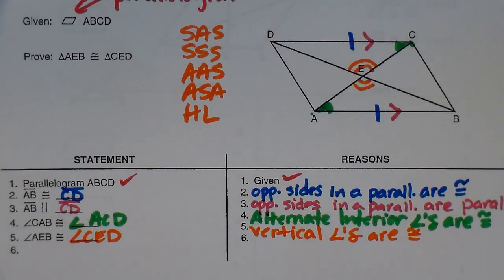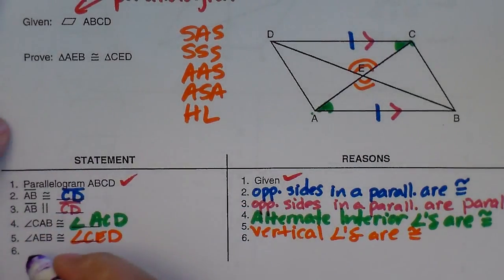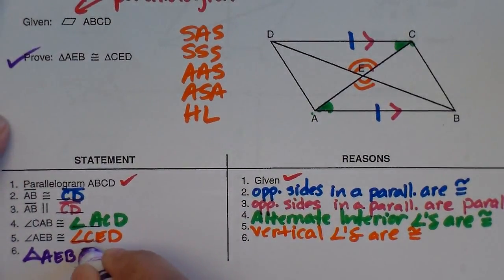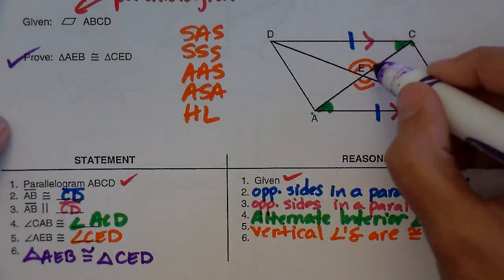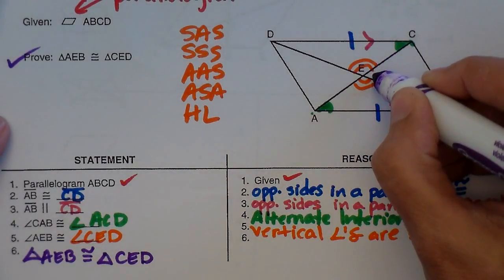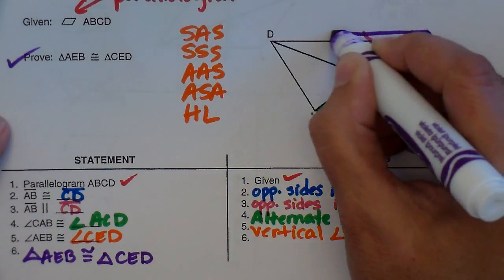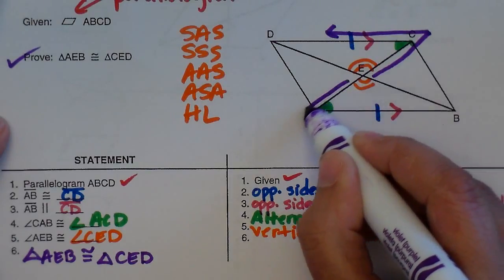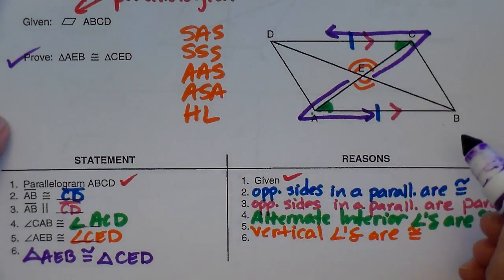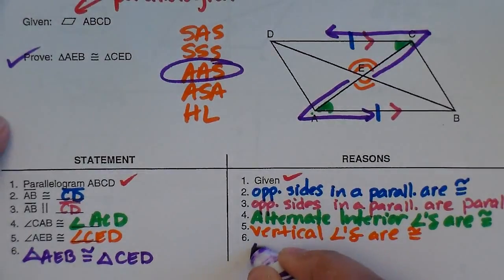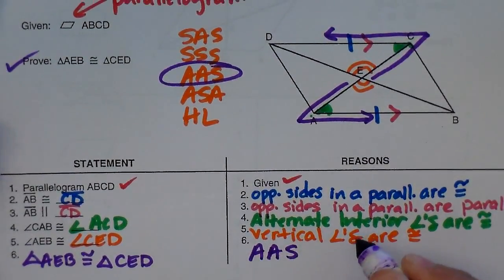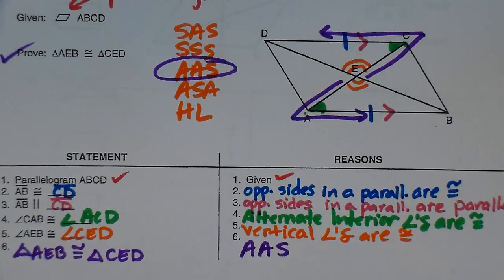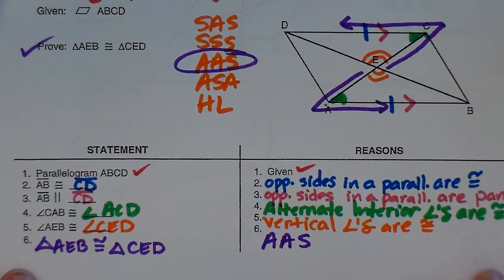Now look at your triangles. Do I have enough to say the two triangles are congruent? I actually do. Triangle AEB is congruent to triangle CED. And how do I know that? Well, let's follow: orange angle, green angle, blue side. Let's see if I have the same sequence over here. Do I have orange angle, green angle, blue side? Yes. So it's angle, angle, side. And you've just proven those triangles congruent using the properties of a parallelogram.